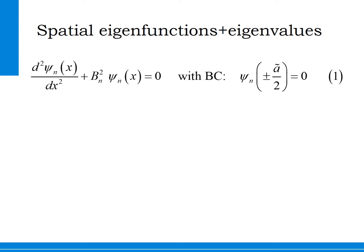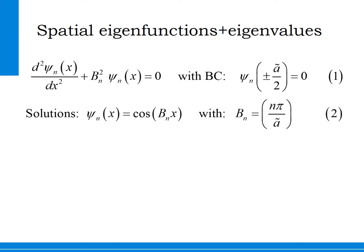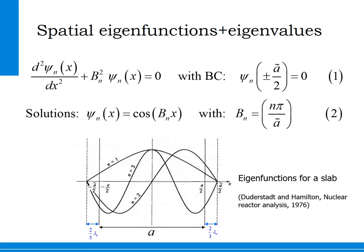The Helmholtz equation in one-dimensional slab geometry with the boundary conditions gives an infinite number of combinations of eigenfunctions and eigenvalues fulfilling the differential equation. The solution is a series of cosine functions and sine functions. In the solution we have omitted the sine functions for good reason: the sine functions corresponding to even n give a non-symmetric flux distribution, which is not a valid solution for a homogeneous geometry. Despite omitting the sine functions, there is still an infinite number of solutions satisfying the differential equation and boundary conditions, corresponding to odd values of n.